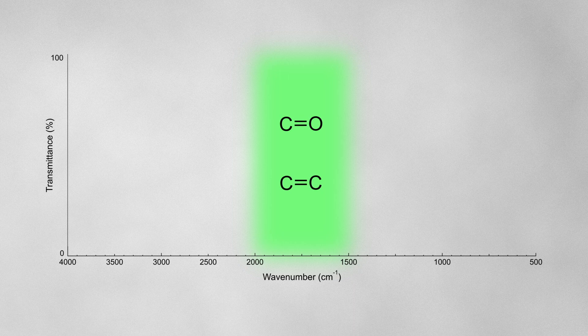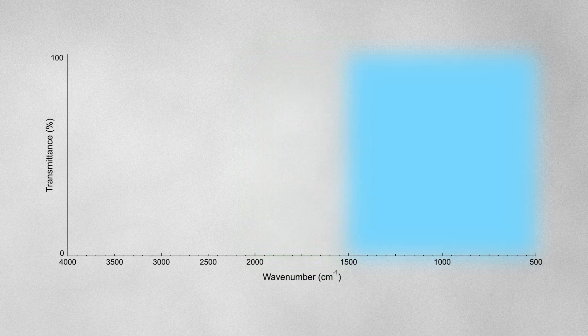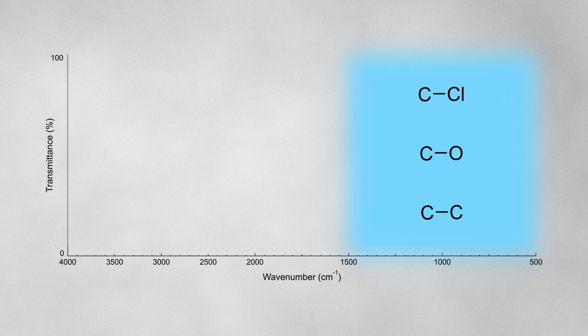Finally, absorptions in the region 1500 to 500 are typically due to single bonds that don't include hydrogen. These have the lowest frequency, as they're the weakest in comparison to the rest.